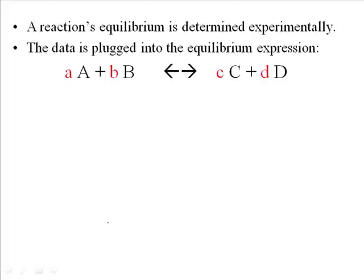When we do measure that information, we can use it to develop an important and easy-to-understand constant that tells us about the equilibrium. The equilibrium expression is based on a general reaction. In this general reaction, we have reactants A and B, and products C and D. You can adapt this for any chemical reaction, no matter how many reactants or products.